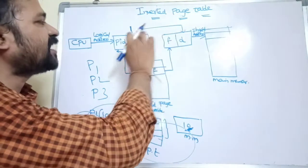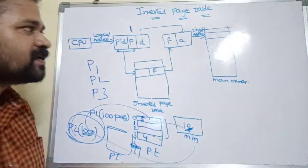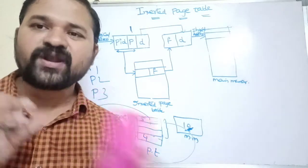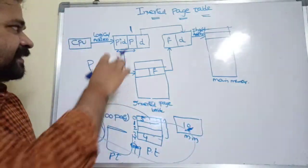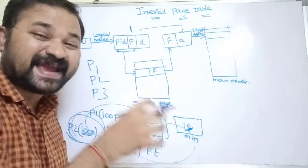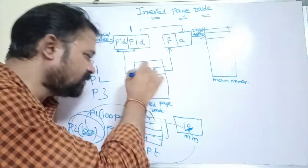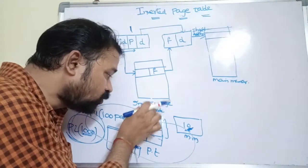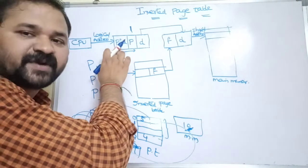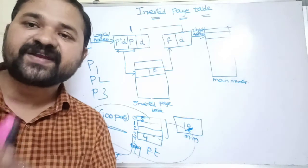If we combine the frame number with the offset, we get the exact physical address in main memory, and the CPU executes the corresponding instruction. So the only change being made is that in addition to page number and offset, we pass the process identification number to the inverted page table. The inverted page table accepts the PID and page number as input and returns the frame number.